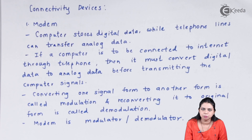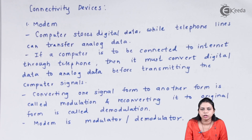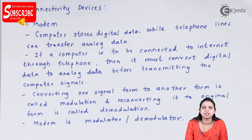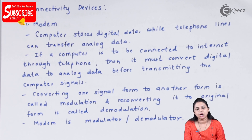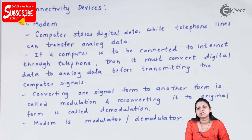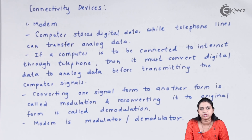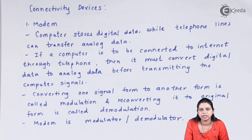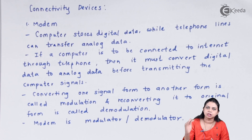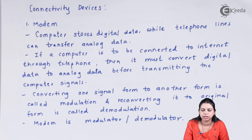First we will start with the modem. Modem works as a modulator and demodulator. Our computer understands only digital data whereas our telephone line understands only analog data. Your computer can carry only digital data whereas the telephone line carries only analog data.